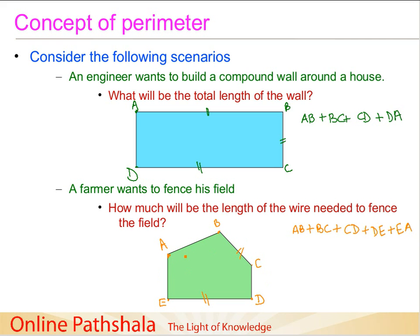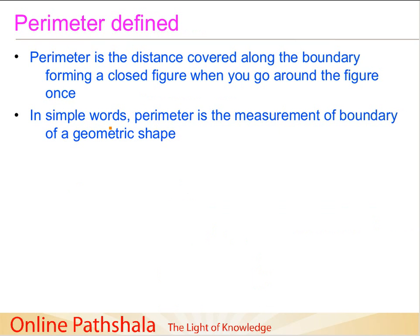This is exactly what we mean by perimeter — it is nothing but the length along the boundary. Perimeter is the distance covered along the boundary forming a closed figure when you go around the figure once. In simple words, perimeter is the measurement of the boundary of a geometric shape. As seen in the earlier two examples, perimeter is indeed used a lot in our day-to-day lives, helping us derive things like the length of a compound wall to decide the amount of work, cost of material, and people needed.